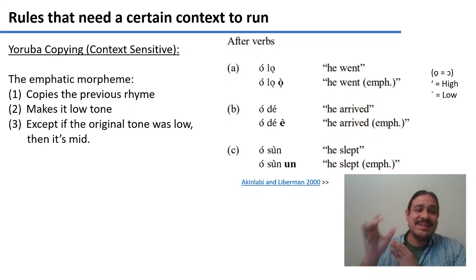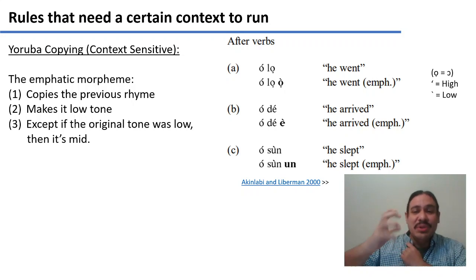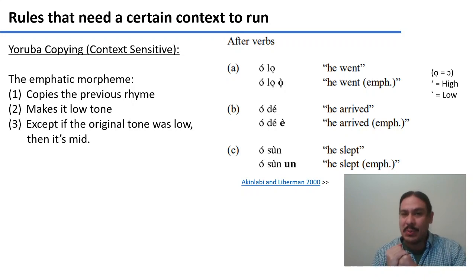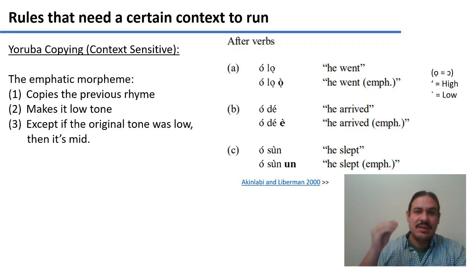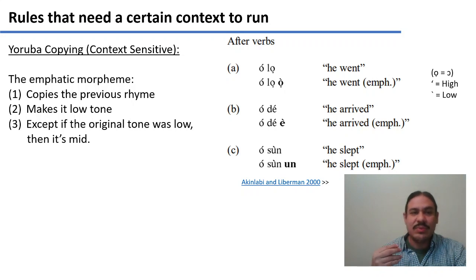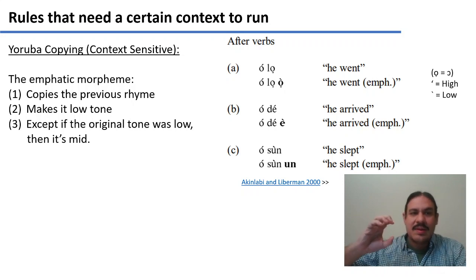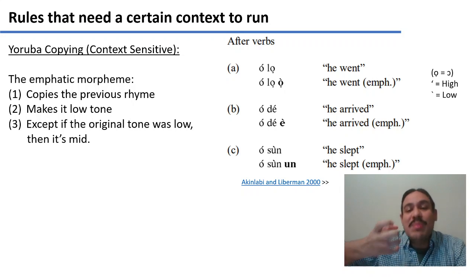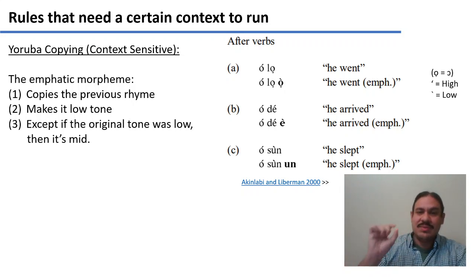The emphatic morpheme is made by taking the previous rhyme — the vowel and the final consonants — and making them low tone, except if the original tone was already low. In C, we have 'o-soon,' meaning 'he slept,' with tones high-low. To make the emphatic, we take the rhyme, and because the word had a low tone, we need to turn that low into a mid-tone. So 'o-soon-oon' — high, low, mid — means 'wow, he slept.'